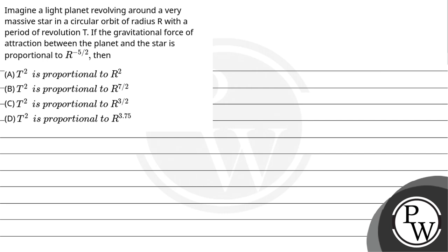Let's read the question. Imagine a light planet revolving around a very massive star in a circular orbit of radius R with a period of revolution T. If the gravitational force of attraction between the planet and star is proportional to R raised to the power minus 5 by 2,